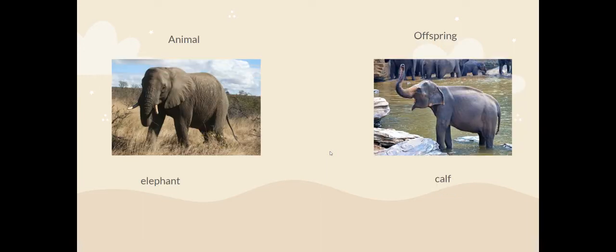An elephant's offspring is called a calf. What is the same and what is different about an elephant and a calf? They're slightly different colours and the calf's skin isn't quite as wrinkly. Did you also notice the calf doesn't have tusks yet? Elephants get them as they grow older.